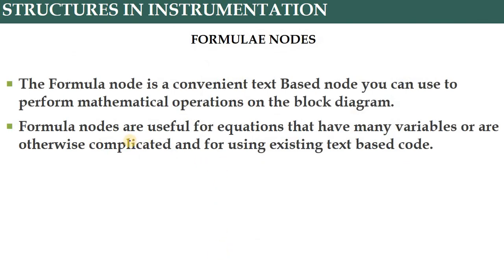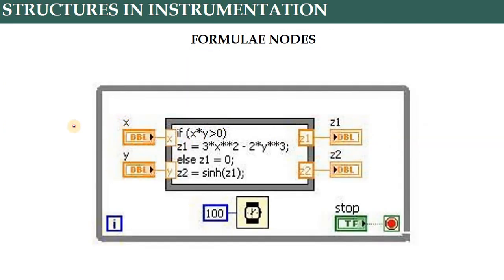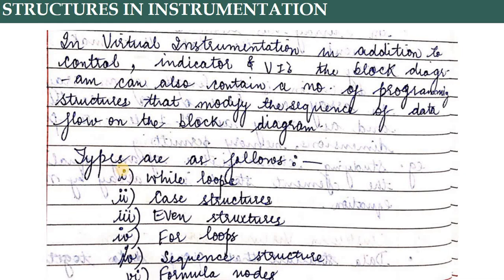Beyond the main four types, there are additional advanced structures such as formula nodes. The formula node is a convenient text-based node used to perform mathematical operations within a block diagram, useful for incorporating equations. For example, if x and y are inputs, a formula node can be added between them to define a mathematical relationship. In a combined example, on/off events, timing, and formula nodes can all be inserted together.